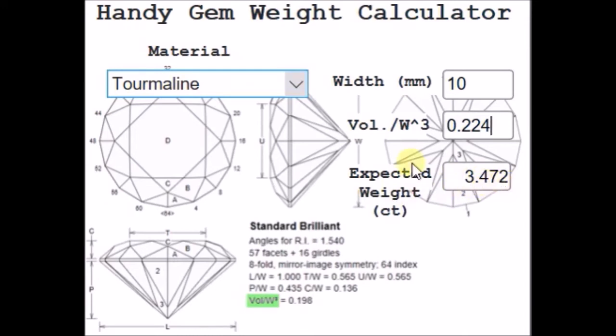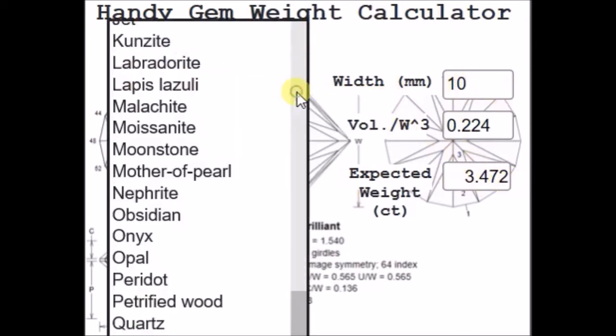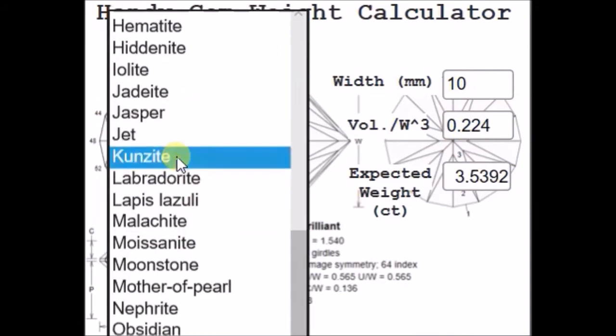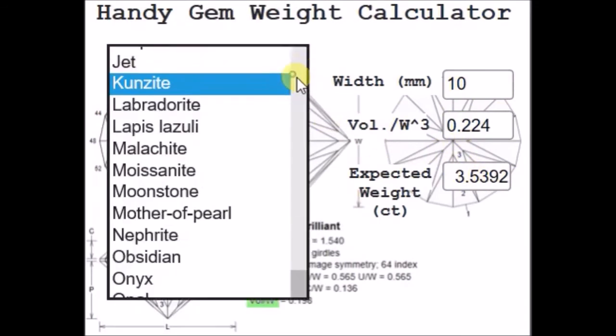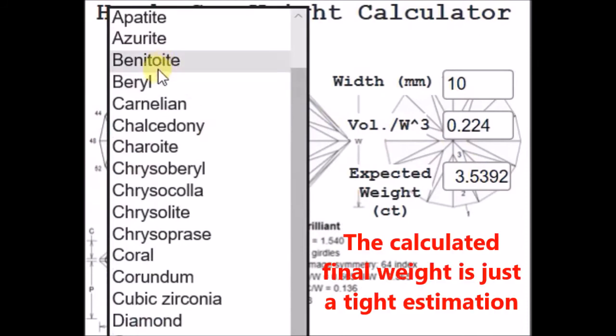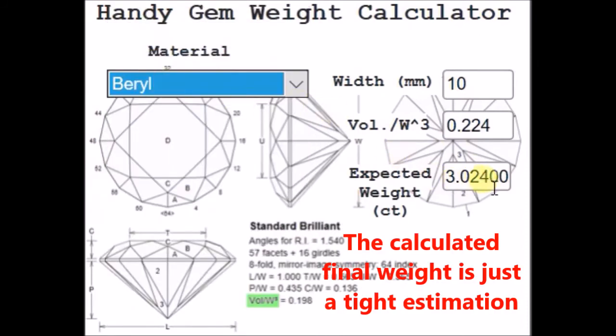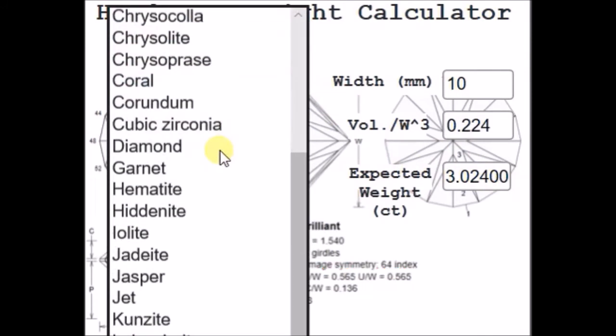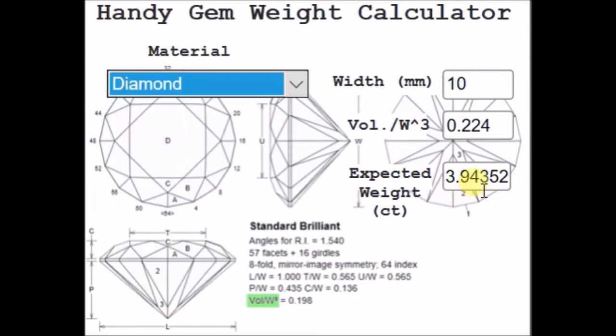So it means that if I would have a tourmaline to cut in the way that I showed you, with the size of 10 mm width, it will weigh 3.472 carats. If it would be another material but with the same cut, you can also change the selection here: kunzite 3.5, maybe an aquamarine with the same width will weigh 3 carats. Let's see a diamond cut like that, it will be 3.9. I find it very useful.